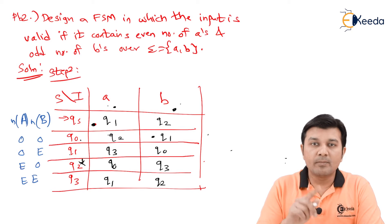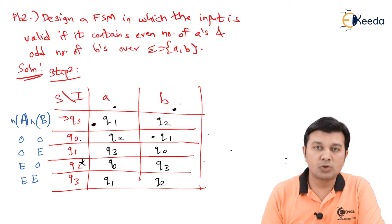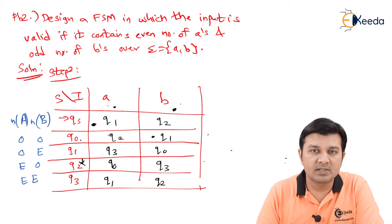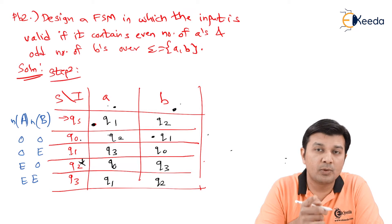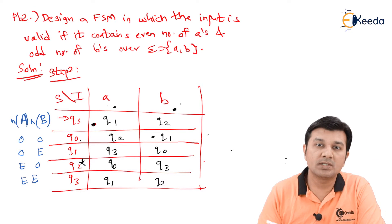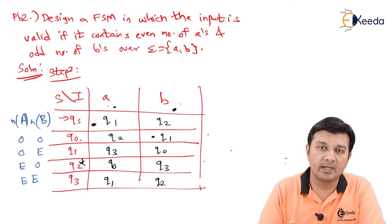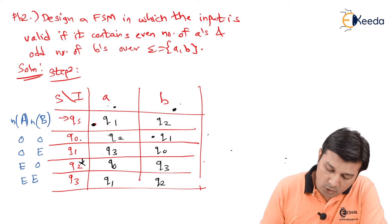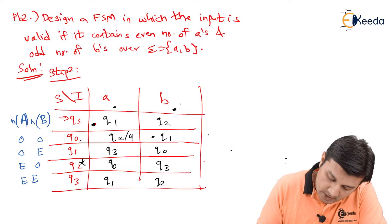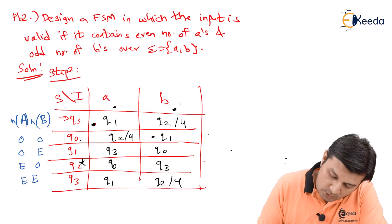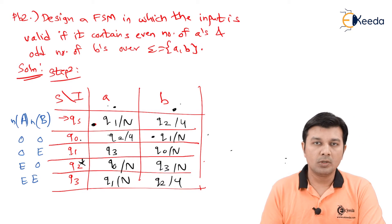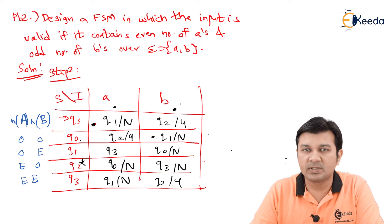Having built the state transition function and identified the final state, we now implement the machine output function. Given a state and an input, what is the output? The output state Q2 contains what is expected — even number of A's and odd number of B's. So everywhere in the state transition function where Q2 appears, we mark the output as yes. All other states output no.